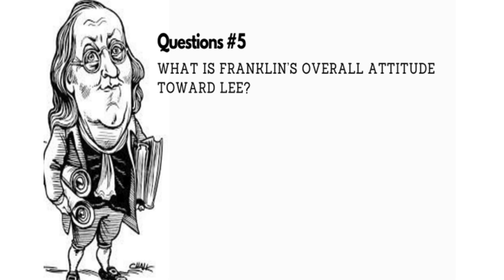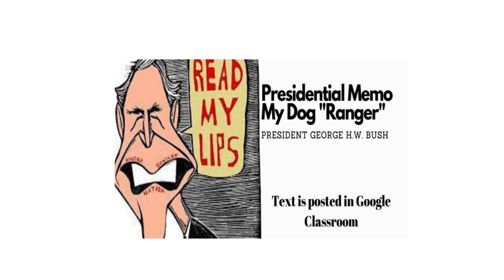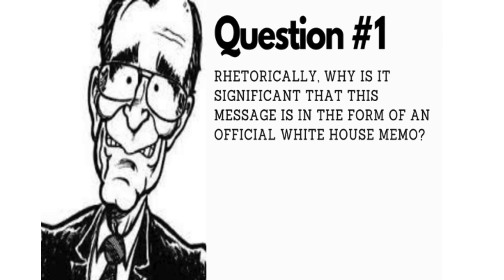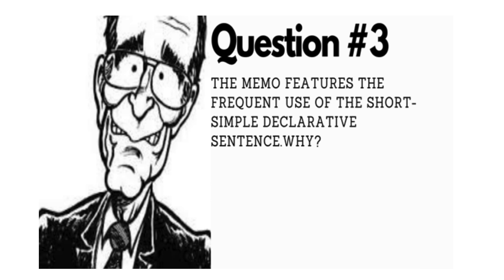I'll show you questions for one more: the presidential memo "My Dog Ranger" from President George H.W. Bush. Question one: rhetorically, why is it significant that this message is in the form of an official White House memo? Number two: the subject heading is in all caps — how does this create meaning in the work as a whole? Number three: the memo features frequent use of the short, simple declarative sentence — why? I want to pause here: the Ben Franklin letter asks the exact same question, so I want students to start paying attention to sentence complexity and syntax at the sentence level, since multiple choice questions often ask those types of questions.